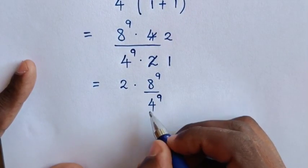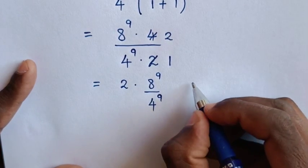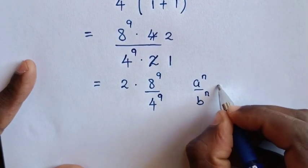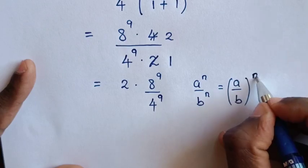Then this is division of exponents with different base but same power. So we'll apply the rule: a power n over b power n is equal to a over b bracket power n.